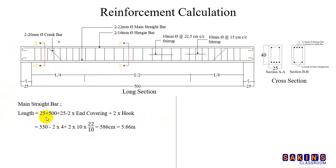Main straight bar: length is 25+500+25 minus 2 times end covering minus 2 times hook. We have 550cm minus 2 into 4, this is covering 4cm plus 2 into 10 into d. 10d, this is diameter of bar, diameter of 20mm. The total of 5.86m.